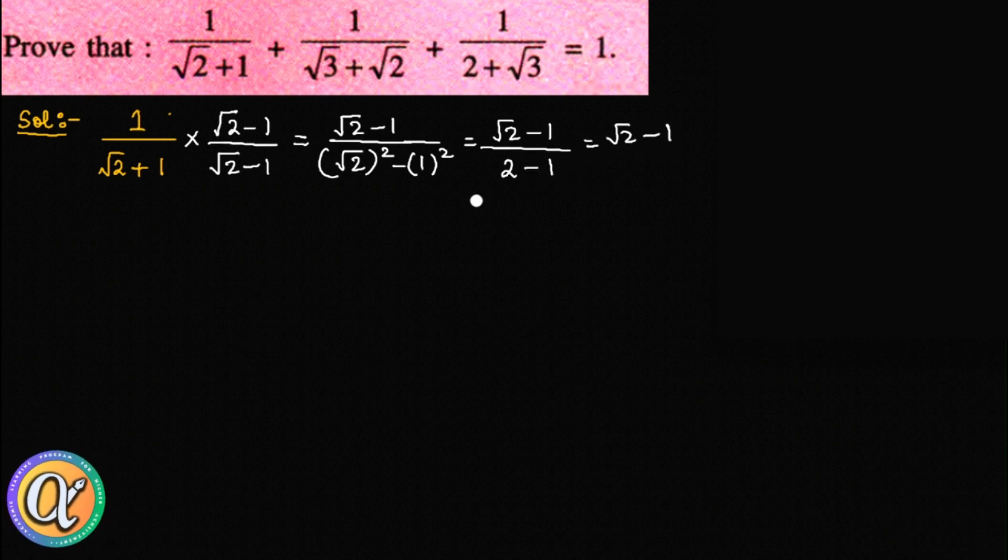Root 2 minus 1. Then the numerator, again root 2 minus 1. Then root 2 square. Root 1 square is 1, 1 square. So root 2 minus 1. The 2 minus 1 is like 1 itself, so the answer is root 2 minus 1. Okay, very good.